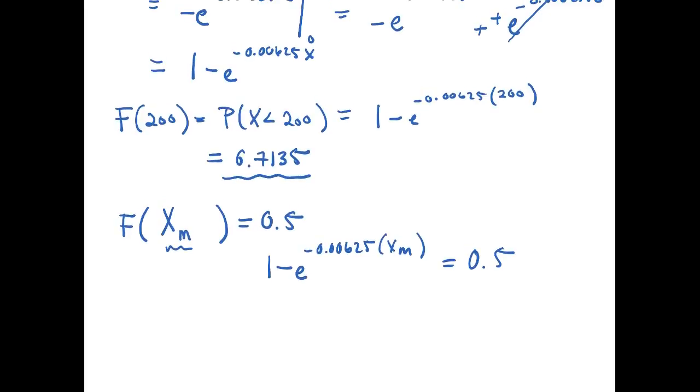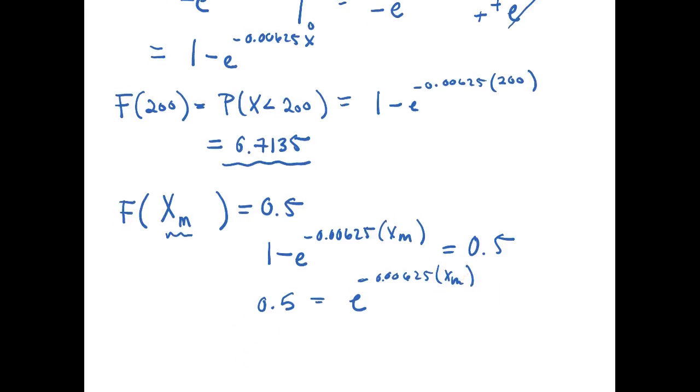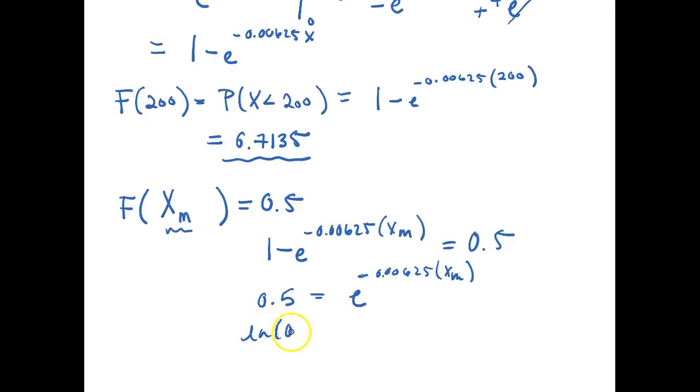Now if I subtract 0.5 from one side and add e to the other side I get 0.5 is equal to e to the negative 0.00625 X sub m, and if I take the natural log of both sides and divide by our lambda, then I'll get the natural log of 0.5 divided by negative 0.00625 and this will be equal to my median or X sub m.